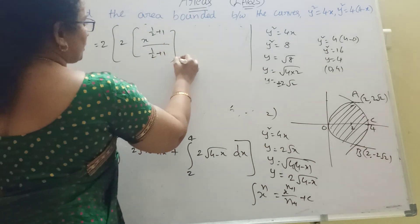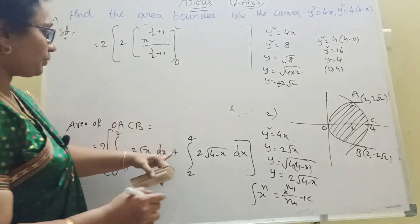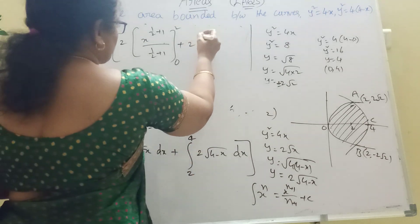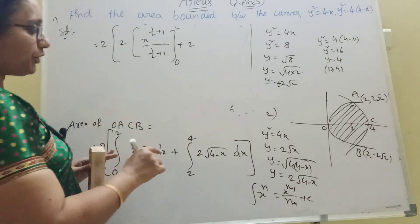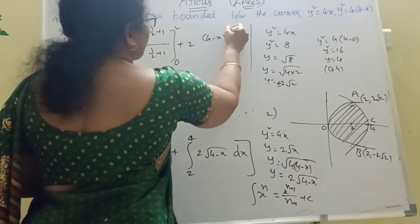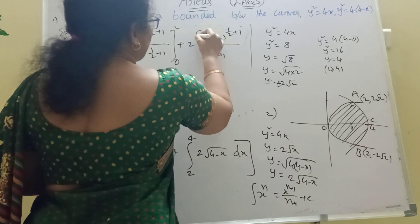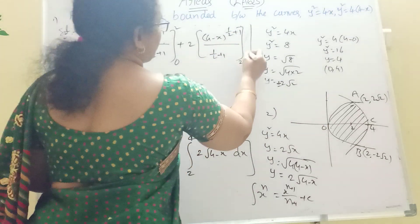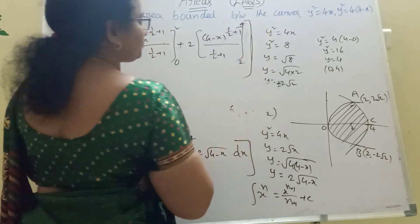The limits for the first integral are 0 to 2, and for the second integral involving 4 minus x whole power 1 by 2, the limits are 2 to 4.